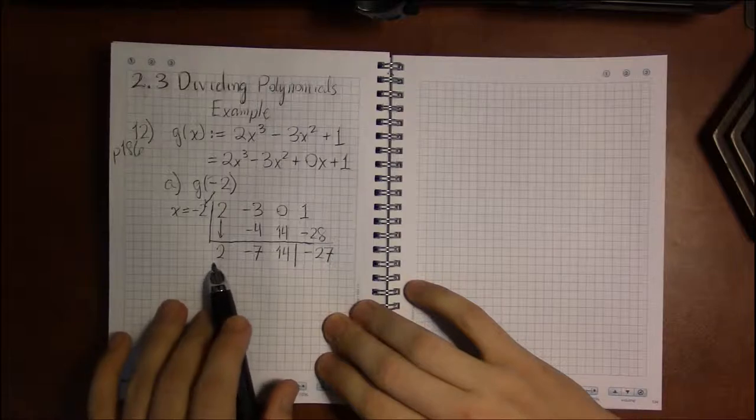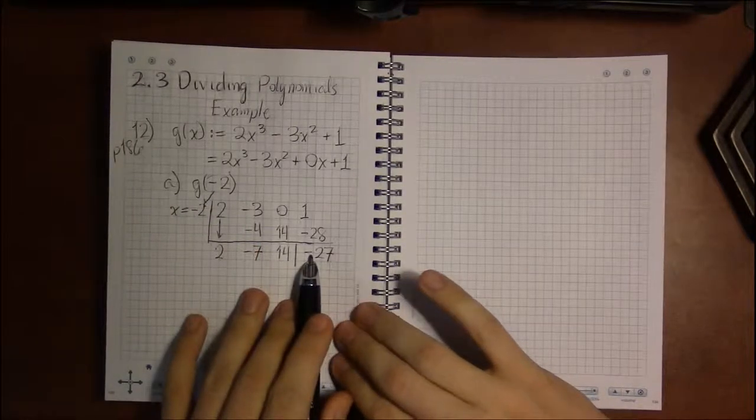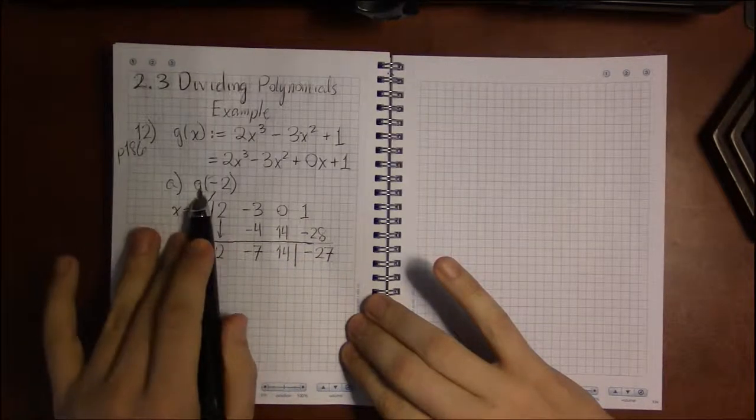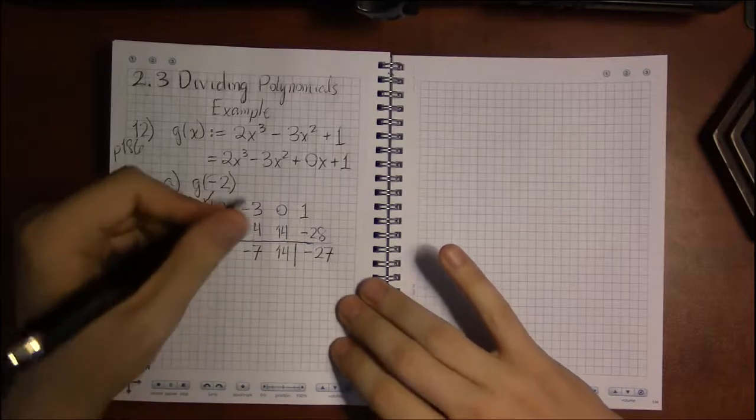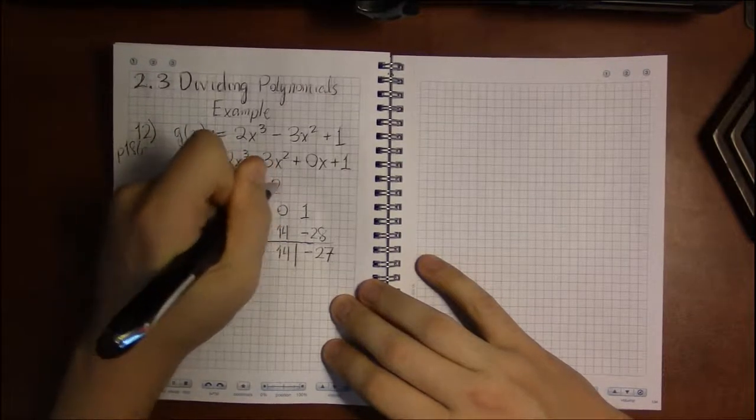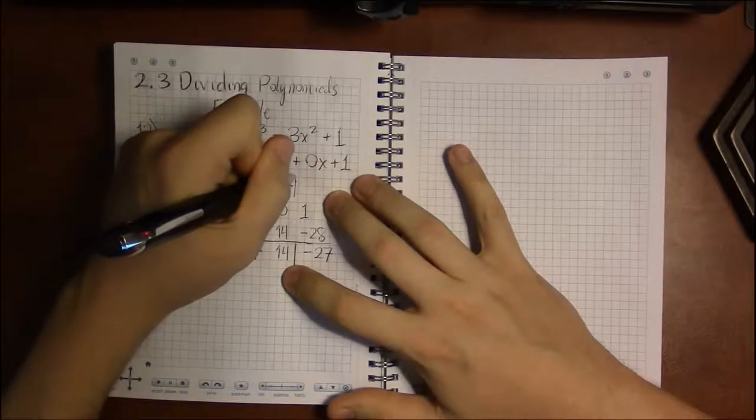The remainder theorem states that when we do this synthetic division, our remainder will be g of minus 2. So our answer is simply that g of minus 2 is minus 27.